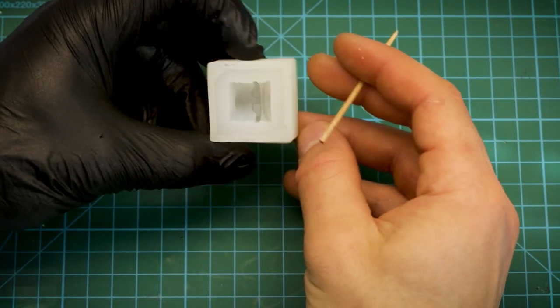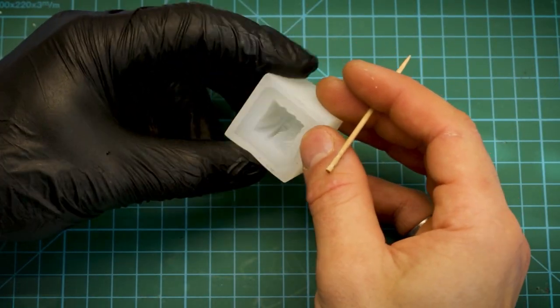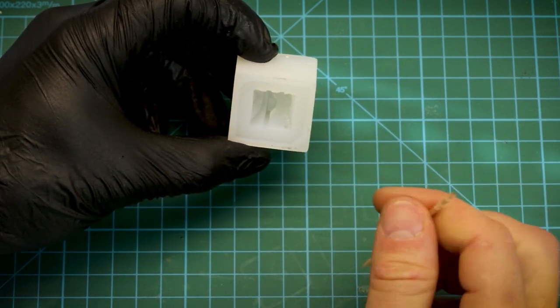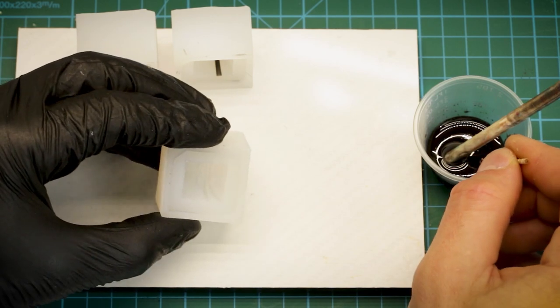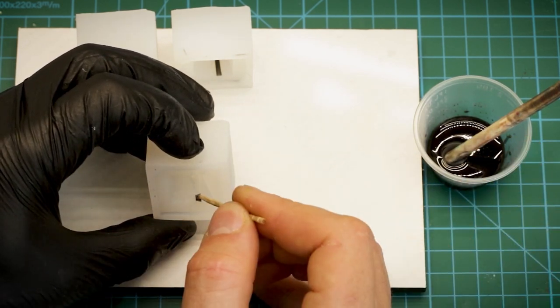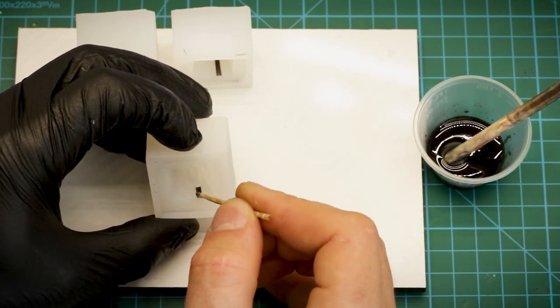For this colorway, the Bandit's glasses are just one color, but since the feature covers three different sides of the mold, we'll have to do a separate shot for each one. We'll start with the right side, and use a toothpick to place drops of resin in the feature, being careful not to spill over onto the hat or the bandana.